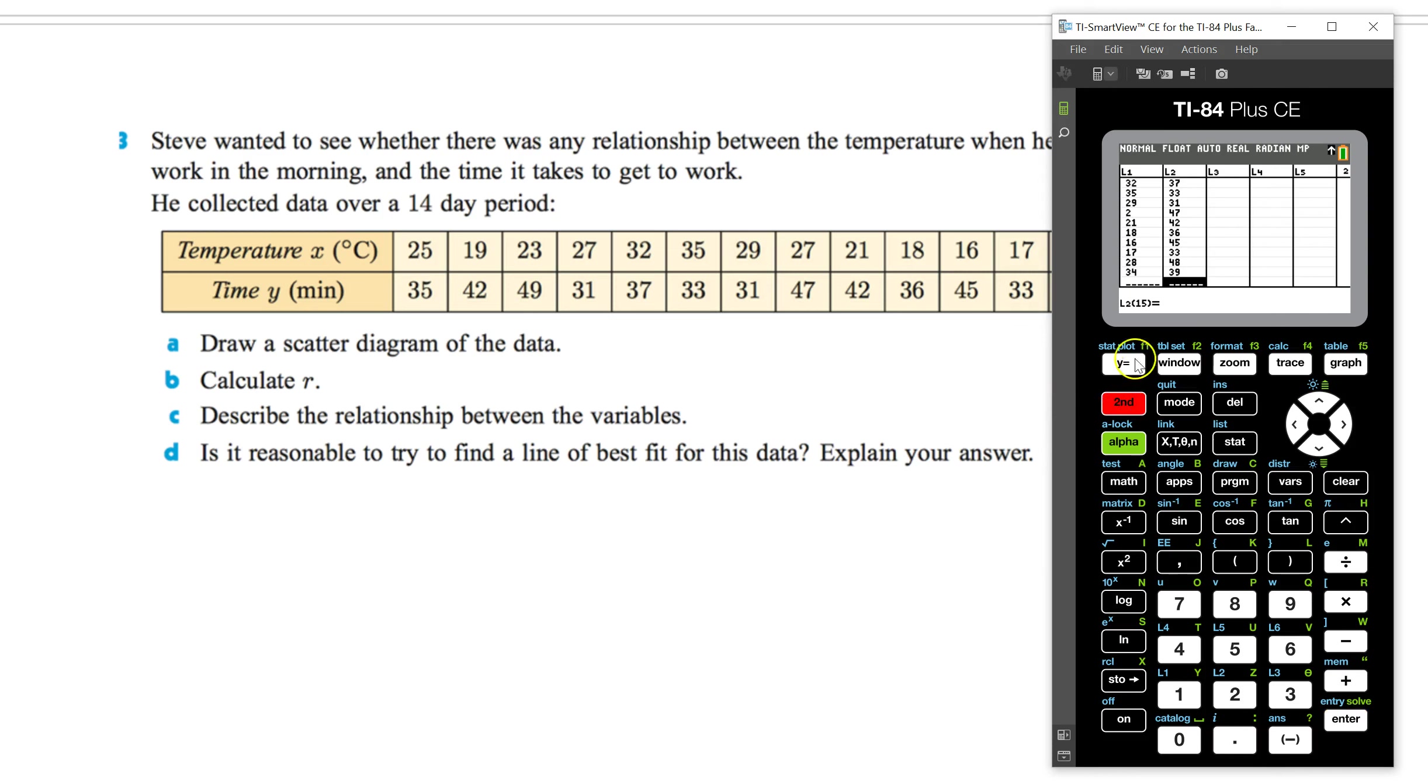Let me cover up some of this information here. So first let's draw a scatter plot. So remember the way we do that. We go second stat plot. I already have it on. I already turned it off. I probably should have. Bad matters in my case. L1, L2 all in there. My marks fine. My color is fine. I'm going to hit graph. Again, now that data, I can kind of see it. But to make it better, let's fix the window. The easiest thing to do is put zoom stat, zoom 9. And then now I can see a better correlation.